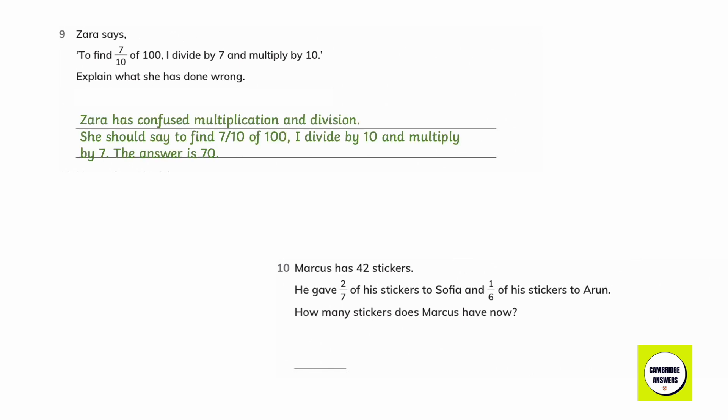Zara has confused multiplication and division. She should say to find 7 upon 10 of 100, I divide by 10 and multiply by 7. The answer is 70.